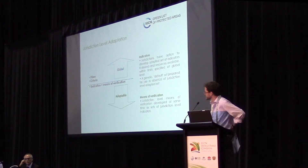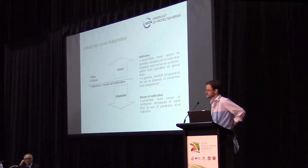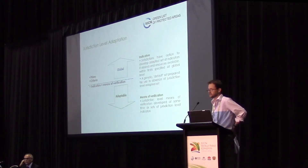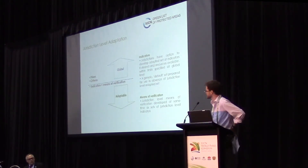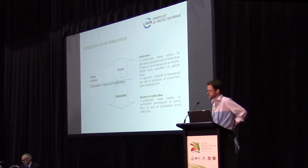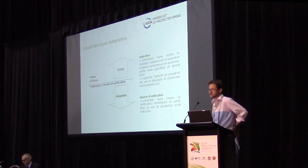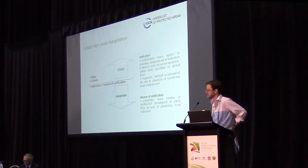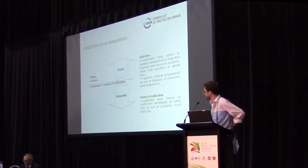The pillars and the criteria are set at the global level. The intent is that they provide a consistent framework applicable everywhere in the world — a level standard so that one green-listed protected area in one place can be deemed equivalent to another green-listed protected area anywhere else in the world. There's also a generic set of indicators — 64 in the generic set at the moment — that you actually evaluate in the field. The reference group process allows those generic indicators to be debated at a more geographically or technically specific level, and if necessary adapted to ensure they are applicable in the protected areas under the jurisdiction of that reference group.